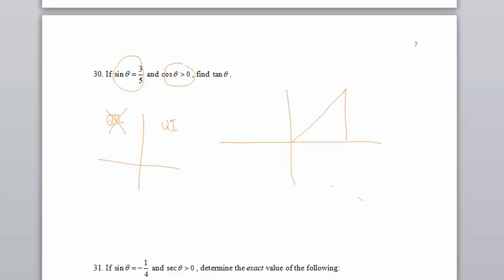So if the sine is three-fifths, that means that's three and that's five. If that's theta, what I've got to do really to find the tangent is to find this right here, which I'll call x.